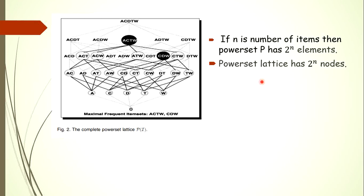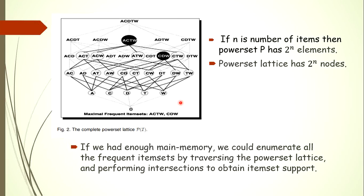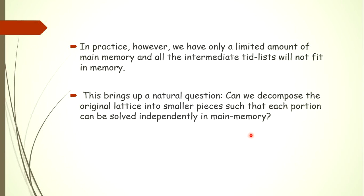If n is the number of items, then the total possible number of itemsets is 2 to the power n. In a lattice, 2^n nodes are required to store all possible itemsets. As we have 5 items in this power set lattice, we have 32 nodes which store all possible itemsets. We can directly traverse the lattice and check whether a particular node is frequent or not — but only if we have enough memory to store the power lattice and all intermediate TID lists. What if we don't have enough main memory to store the entire power lattice and all intermediate TID lists?